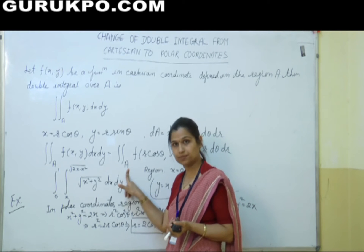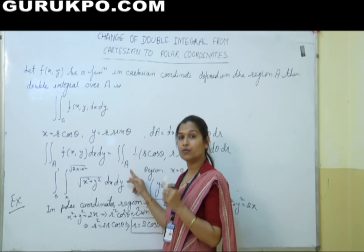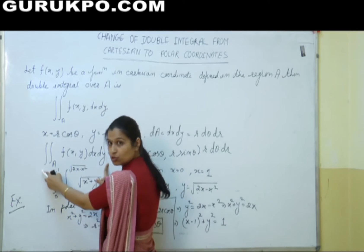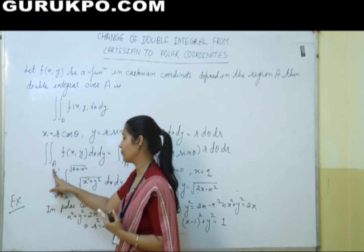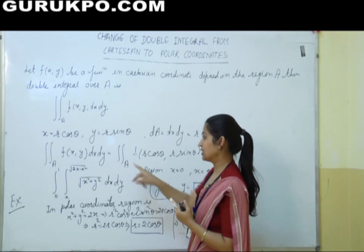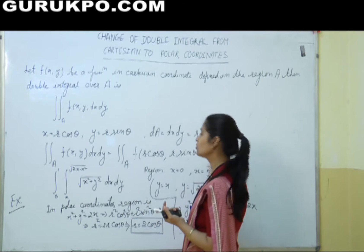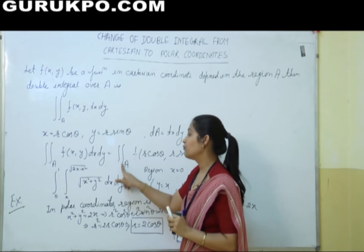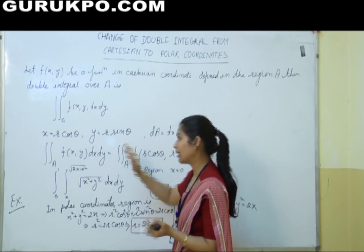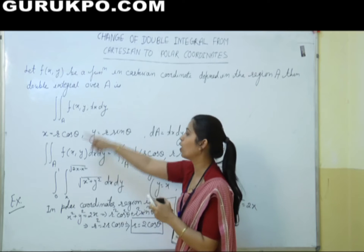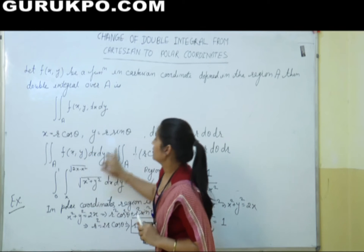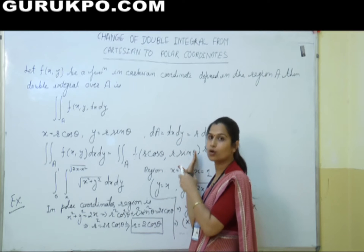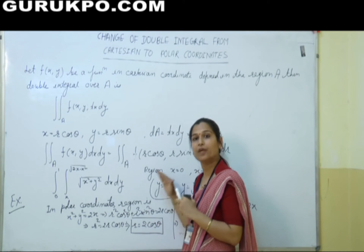Now what about the limits? Remember — we also convert the given limits to polar coordinates, because at this point the limits are in terms of x and y. If your limits are in terms of x and y, then you cannot solve this because the integral is now in terms of r and theta. So we also convert the limits of x and y into terms of r and theta according to your region. This total double integration will convert into polar coordinates and after that we can solve it very easily.